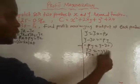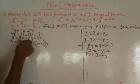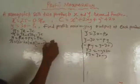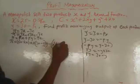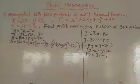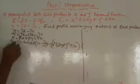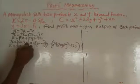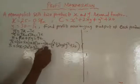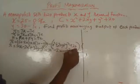Now substituting into the profit function: profit equals (50 minus 2X) times X, plus (30 minus Y) times Y, minus the combined cost function. I put brackets around the cost function to avoid sign errors. The cost function is X squared plus 2XY plus Y squared plus 20. Opening all the brackets: profit equals 50X minus 2X squared, plus 30Y minus Y squared, minus X squared minus 2XY minus Y squared minus 20.